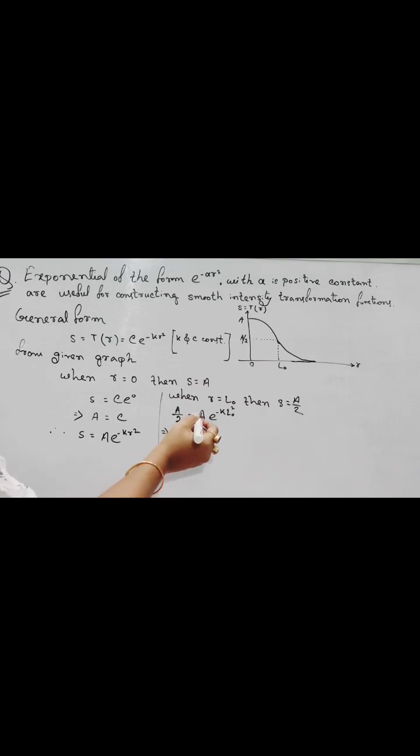A cancels out. Now we take natural log. L in 0.5, it is equal to, L in 0.5, the value will be minus 0.693 equals to minus K L0 square.